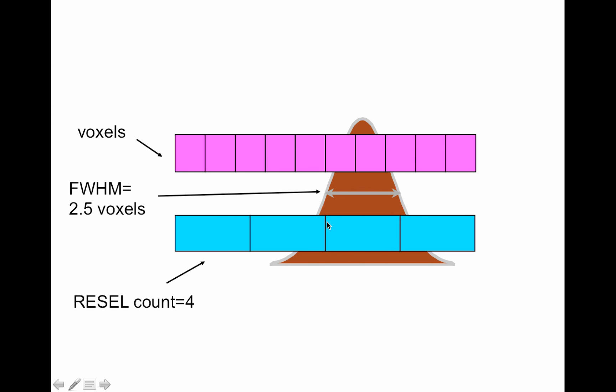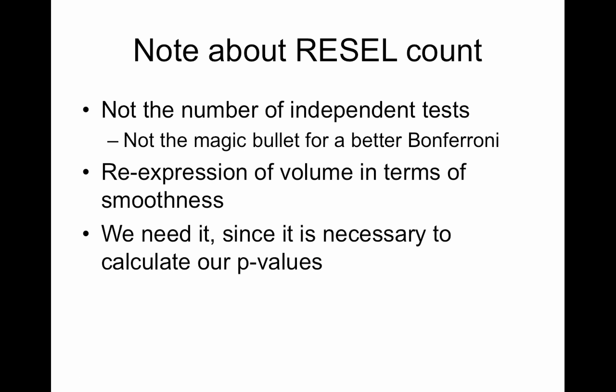So if we use that as our ruler and remeasure the space spanned by our 10 voxels, we get that our RESEL count is four. So that's what a RESEL count is. The RESEL is the product of these full width half maximums in the x, y, and z direction.